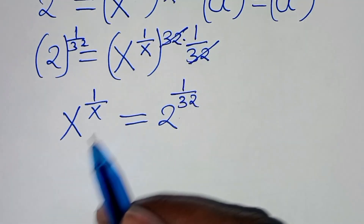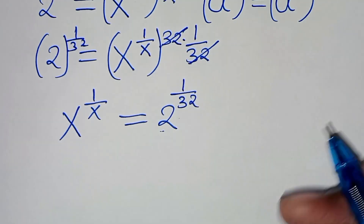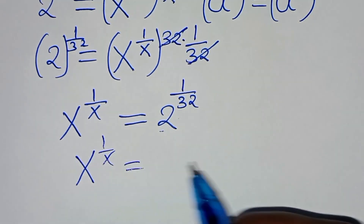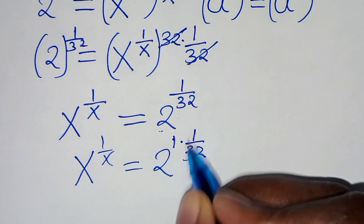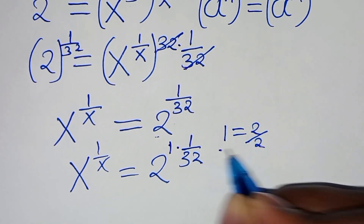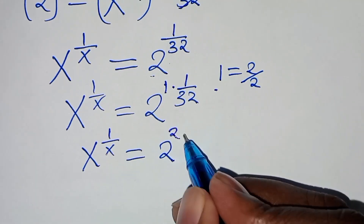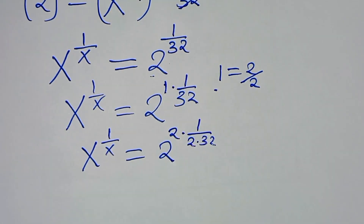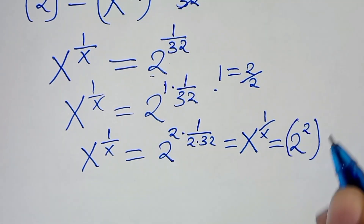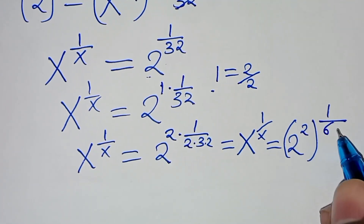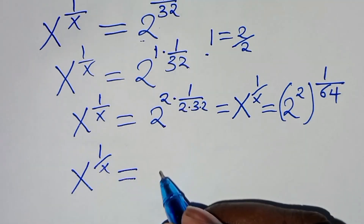We notice that the base x equals the exponent x on the left side. We need to ensure the right side also has base equal to its exponent. So we express 2 to the power 1 over 32 as 2 to the power 1 times 1 over 32, and rewrite 1 as 2 over 2, giving x to the power 1 over x equals 2 raised to the power 2 over 2 times 32, which is 2 squared raised to the power 1 over 64.